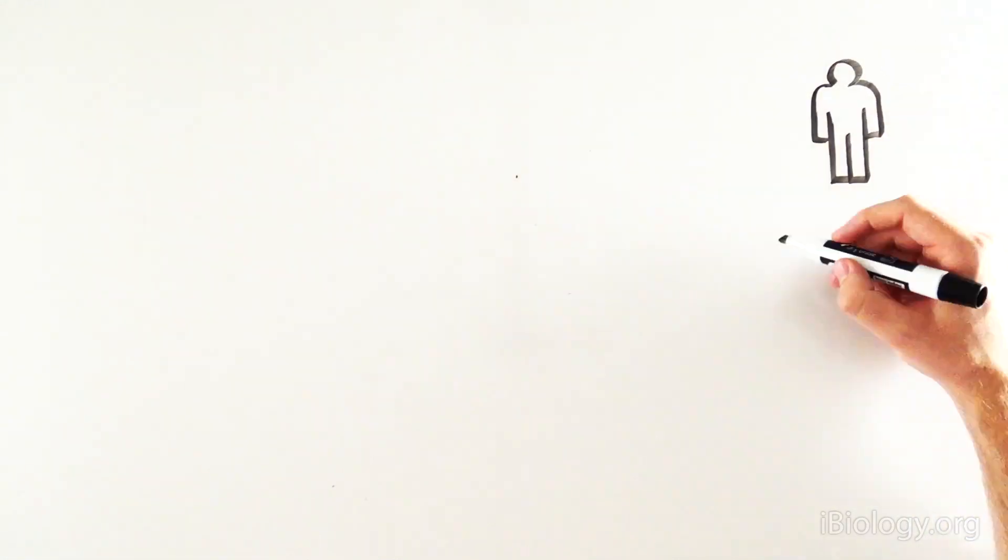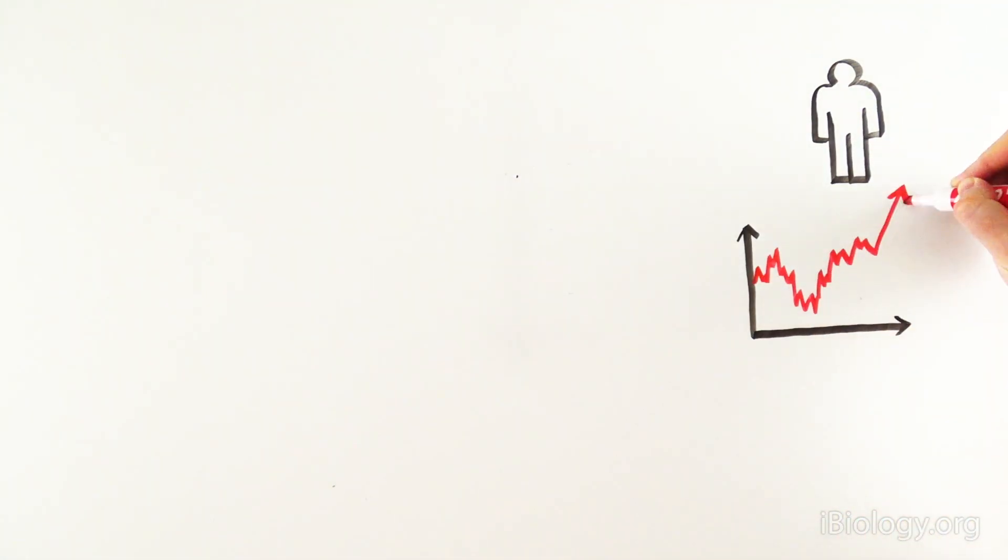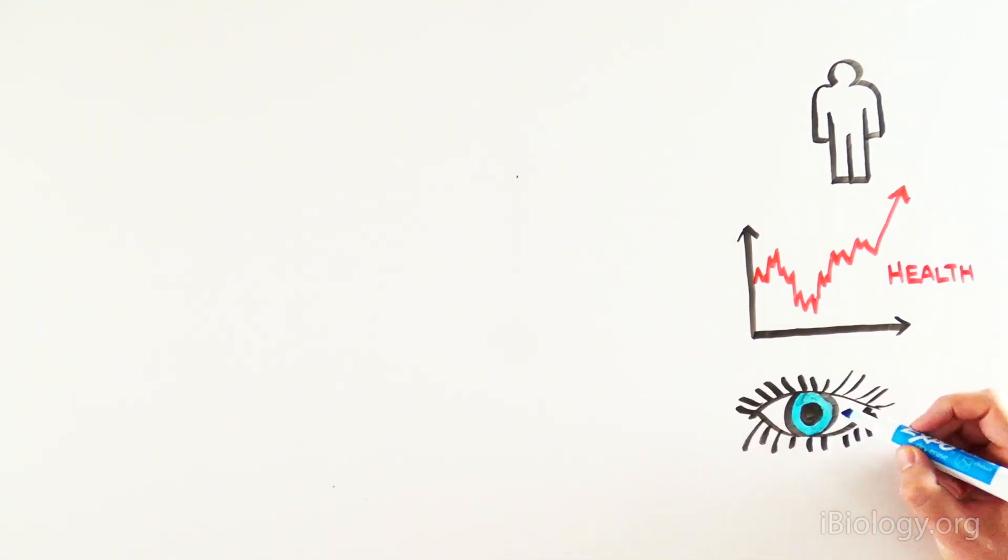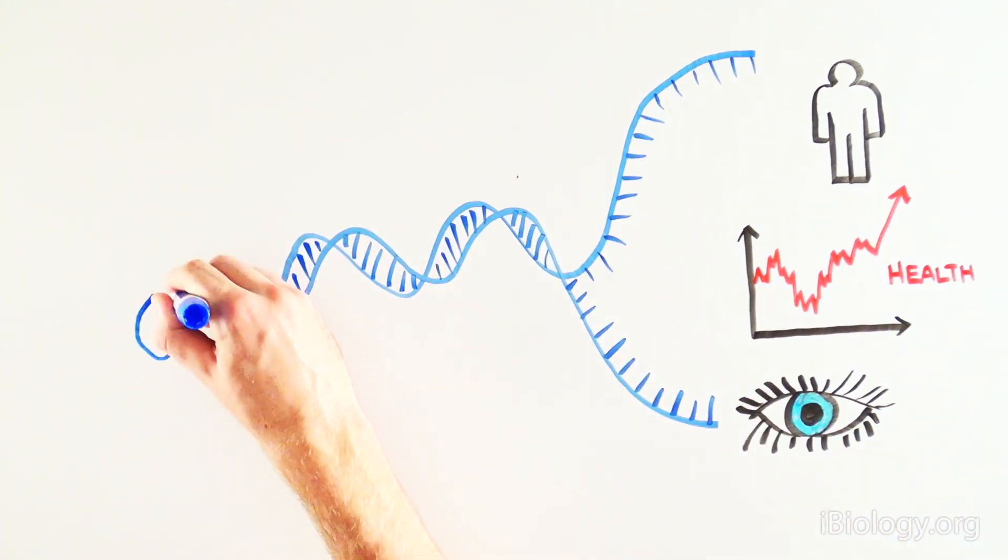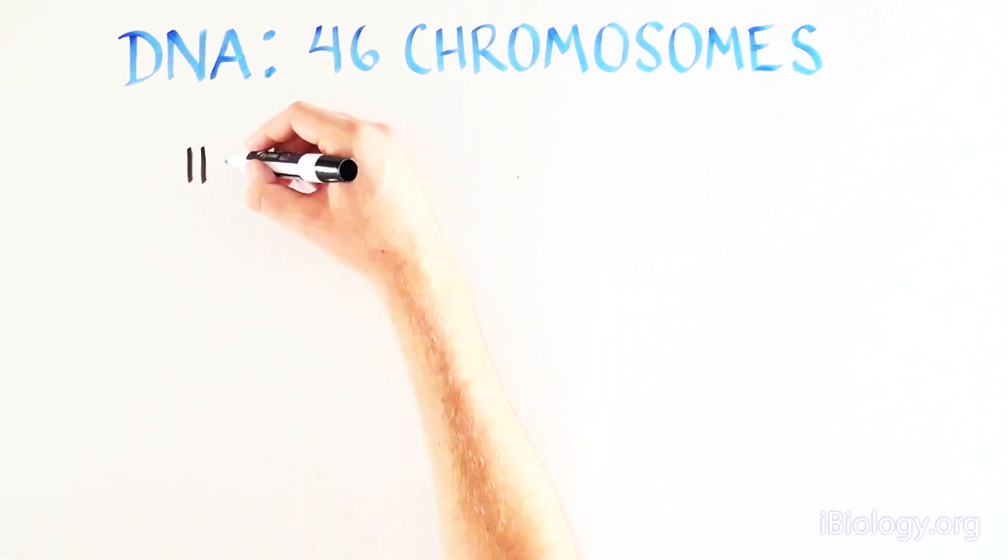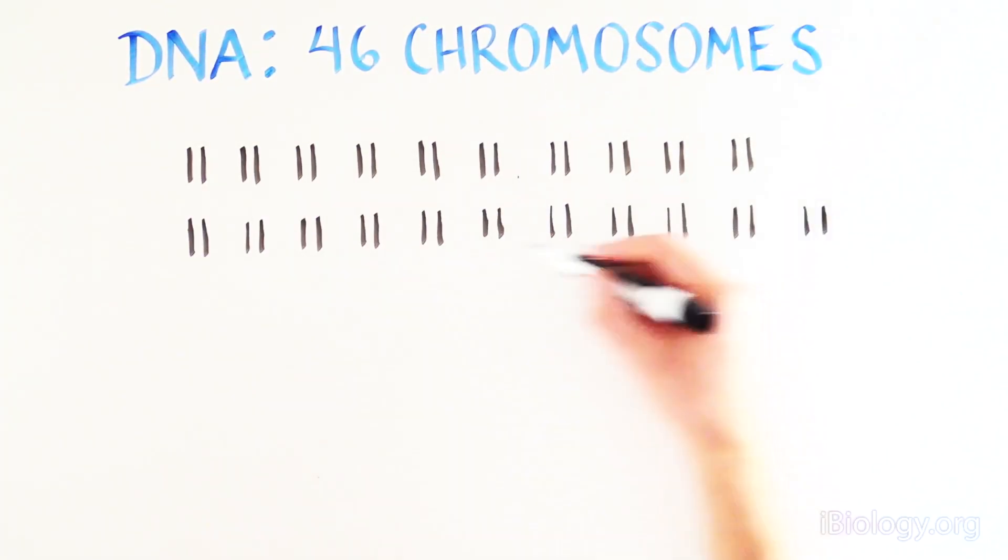All of the information needed to direct our development from single cells, our disease susceptibility, the color of our eyes, and our skin is included in our DNA. This vast amount of information is organized in 46 individual chromosomes.